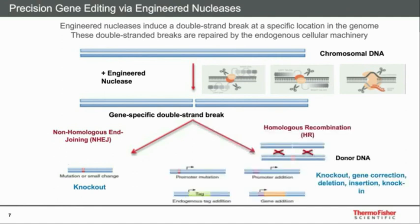These two pathways often conflict with one another and use different enzymes. Non-homologous end-joining is definitely the most prevalent, occurring at a much higher frequency. It's a very random process — as the endogenous cellular machinery repairs the double-stranded break, it generally results in large insertions or deletions of DNA at the target locus. This is generally used to create a knockout — to knock out a gene or protein of interest.